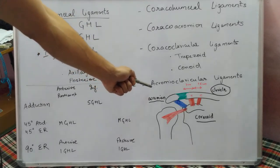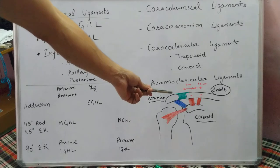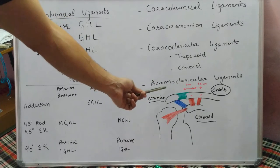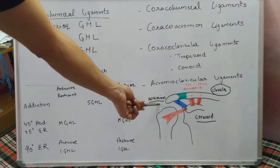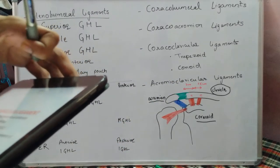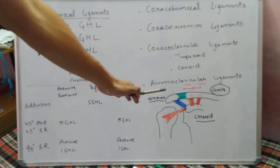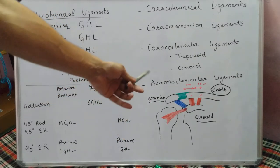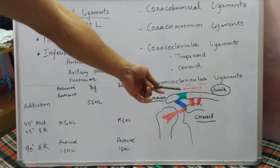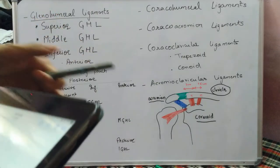Lastly, we have the acromioclavicular ligaments. As the name indicates, they form the acromioclavicular joint, originating from the acromion and attaching to the clavicle. The acromioclavicular ligament has four parts: superior, inferior, posterior, and anterior. Of these, the superior is the strongest, followed by the posterior part.